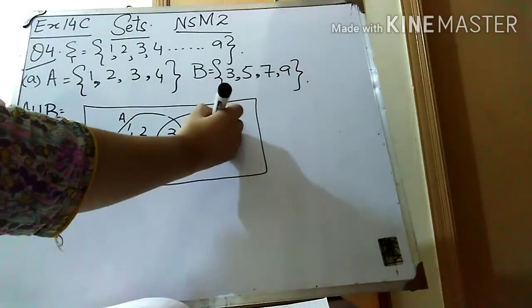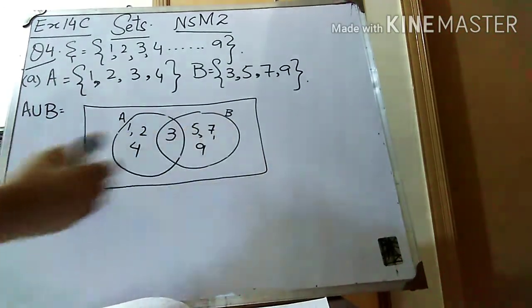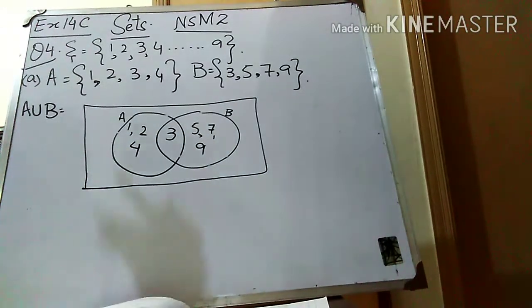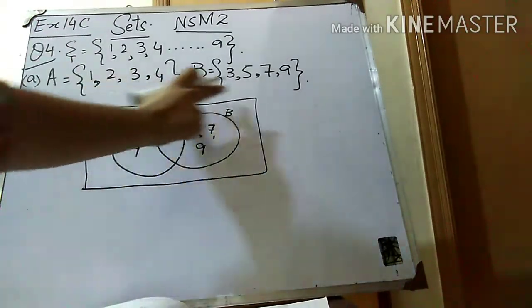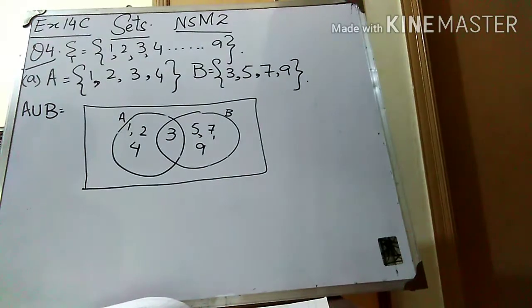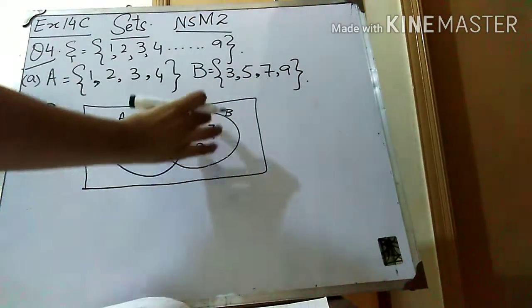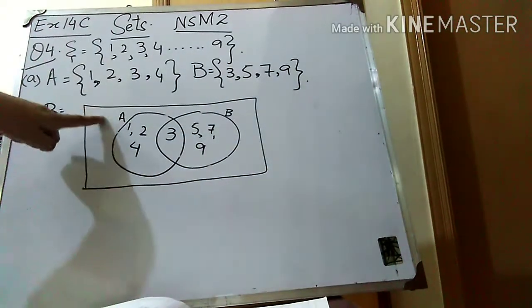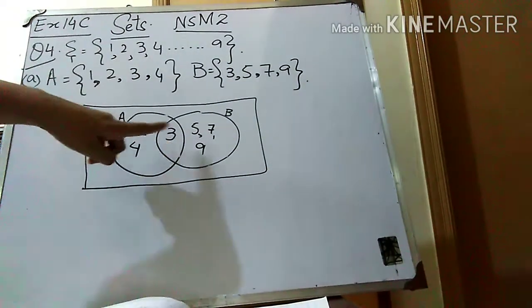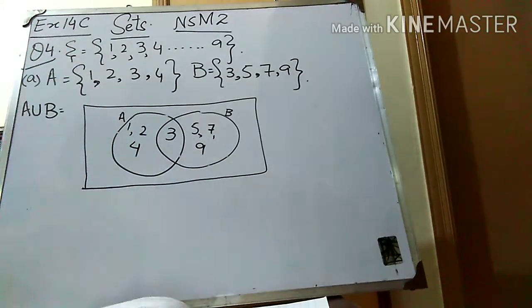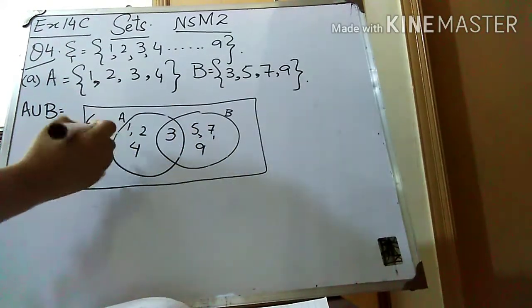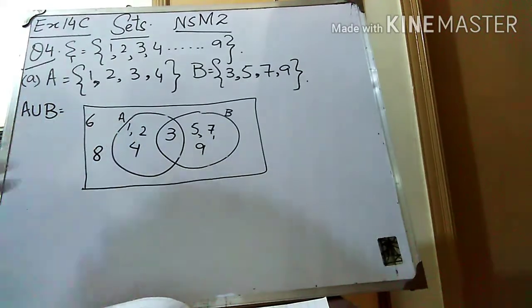There is no other common factor. Remember that you have to write the leftover factors on each side. Except 3, the leftover factors in A are 1, 2, 4, so I write those. The leftover factors except 3 in set B are 5, 7, 9. Now the universal set has factors from 1 to 9. The factors 6 and 8 are not yet written, so I will write 6 and 8 in the rectangular box.